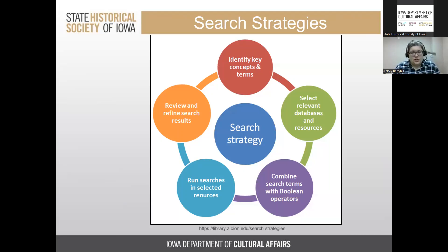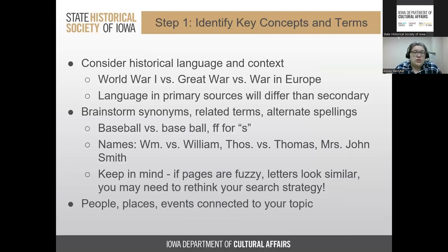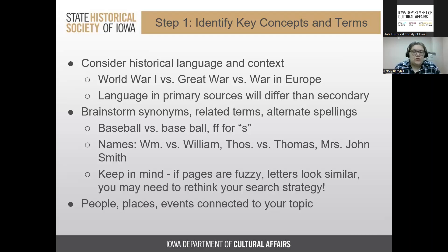Now we'll talk about search strategies. First, identify key concepts and terms, and consider historical language and context. For example, we now say 'World War One,' but at the time they referred to it as 'the Great War' or 'the war in Europe' because there was no World War Two yet. Language in primary sources will also differ from secondary sources — secondary sources tend to use more modern terminology.